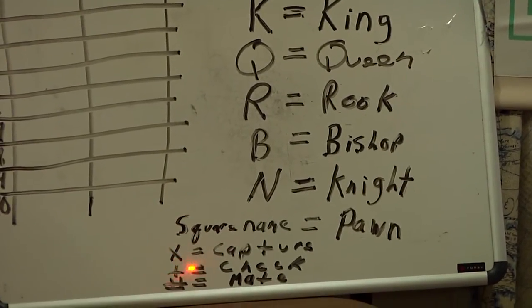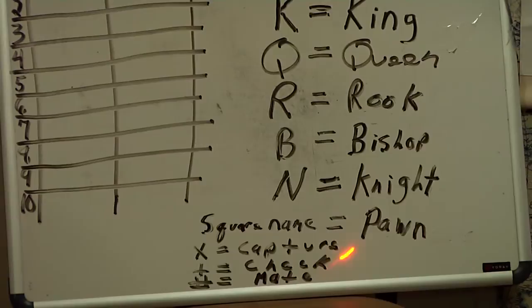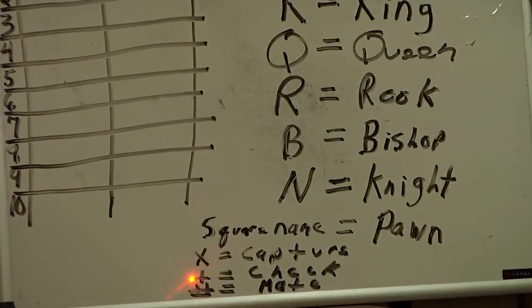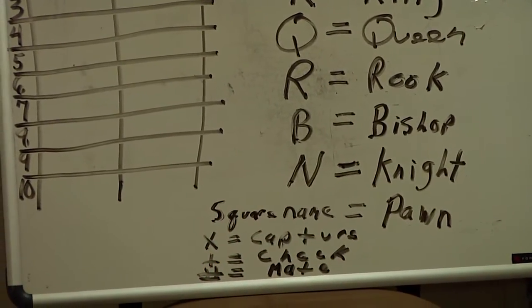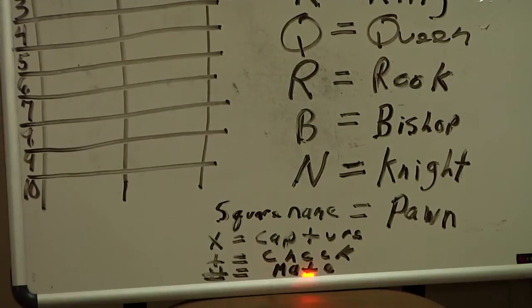We use the letter X to indicate a capture. We use the plus sign to indicate a check, and we use the number or pound sign to indicate mate.